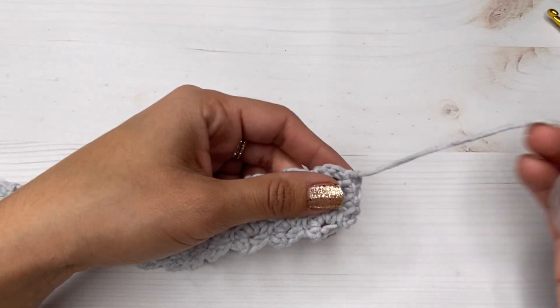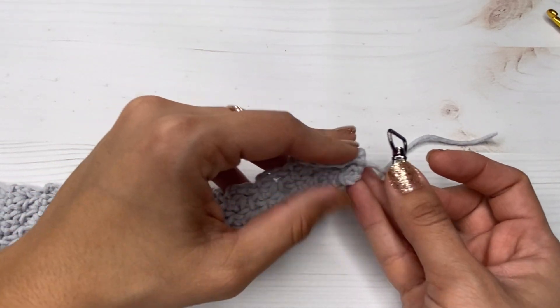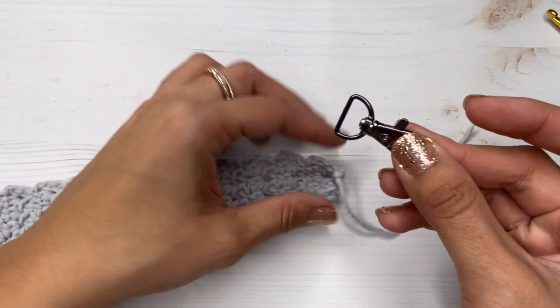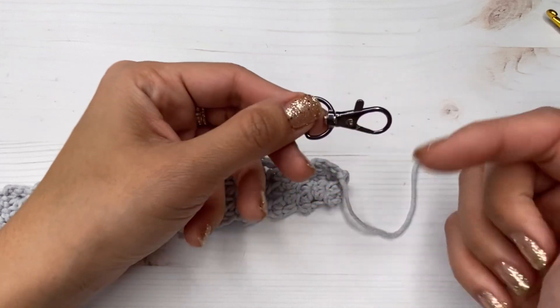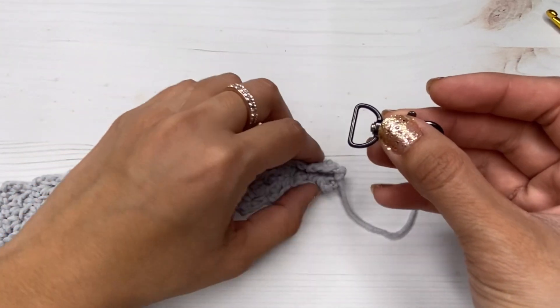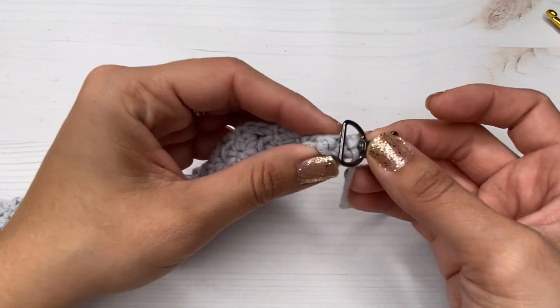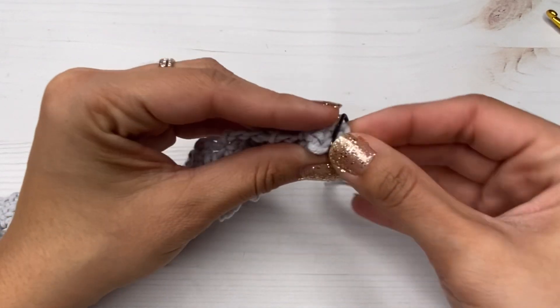Okay, so now we're going to insert our keychain clasp, and this one that I have moves around and I really like it. Like I said, I will leave it in the description box. So I'm just going to fold my project a little bit so I can insert it in there.